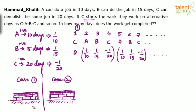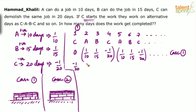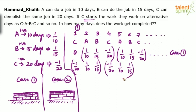In Case 2, on the first day C does minus 1/20, second day A does 1/10, third day B does 1/15 — this becomes one cycle. Then fourth day C does minus 1/20, fifth day A does 1/10, sixth day B does 1/15, and so on. That is Case 2.